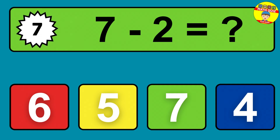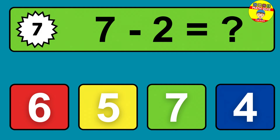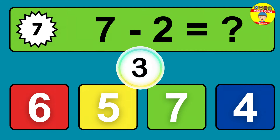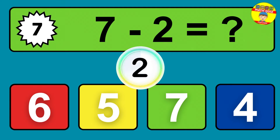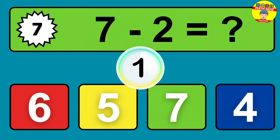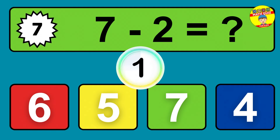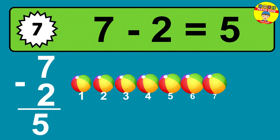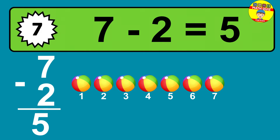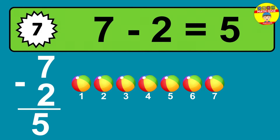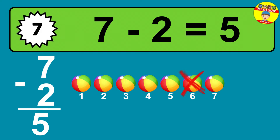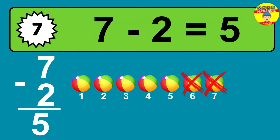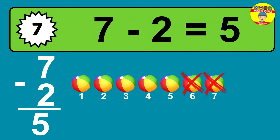Question seven: seven minus two equals what? The answer is seven minus two is five. Let's count it: one, two, three, four, five.